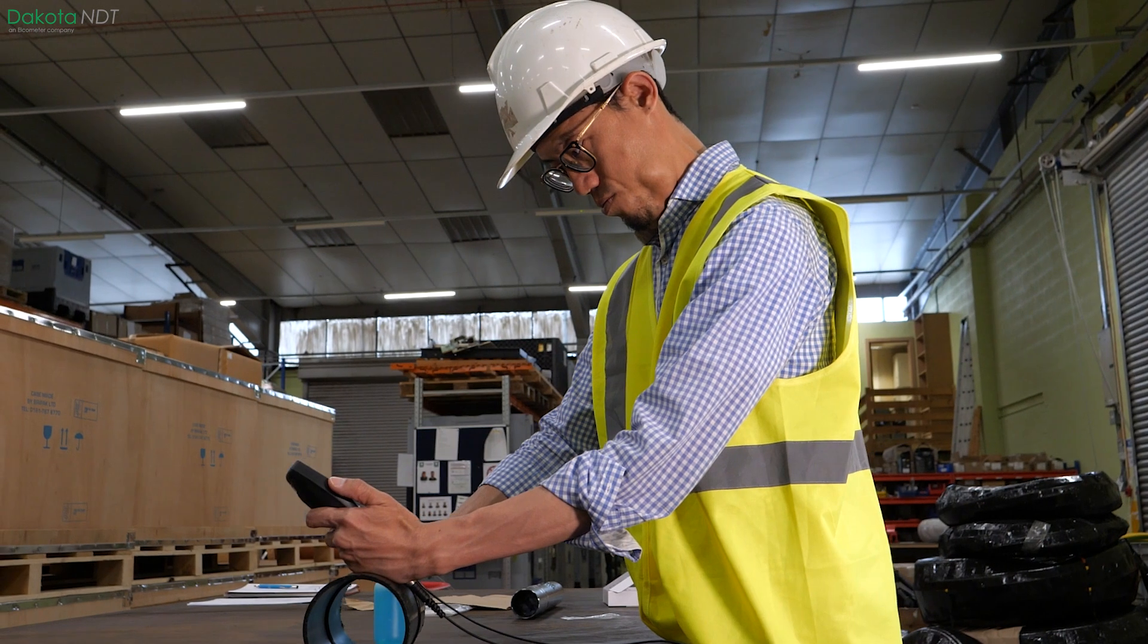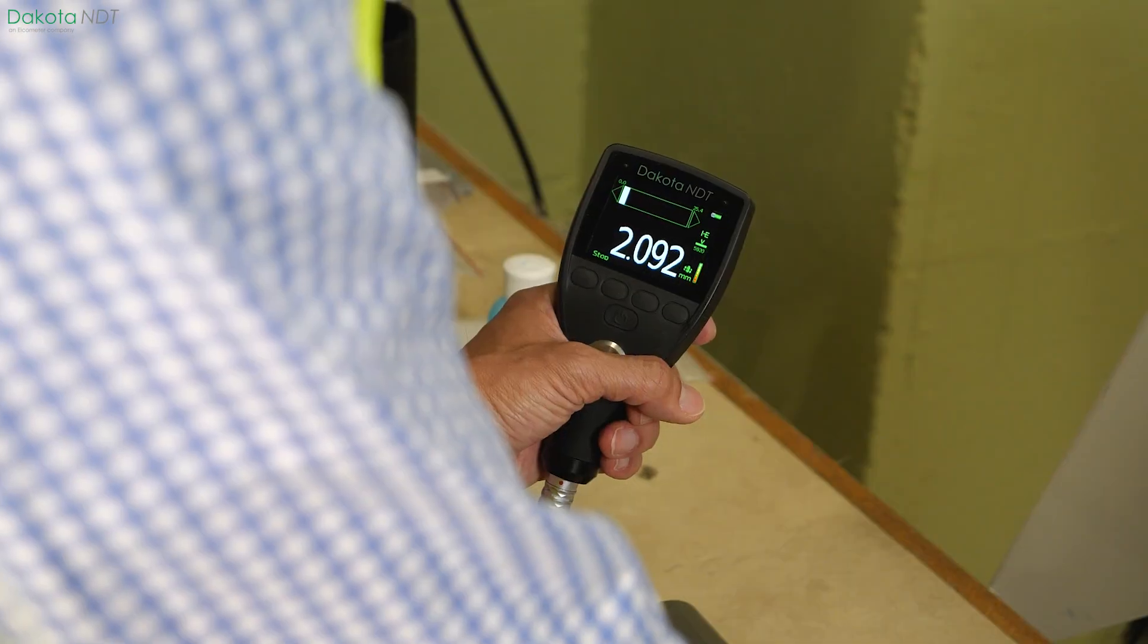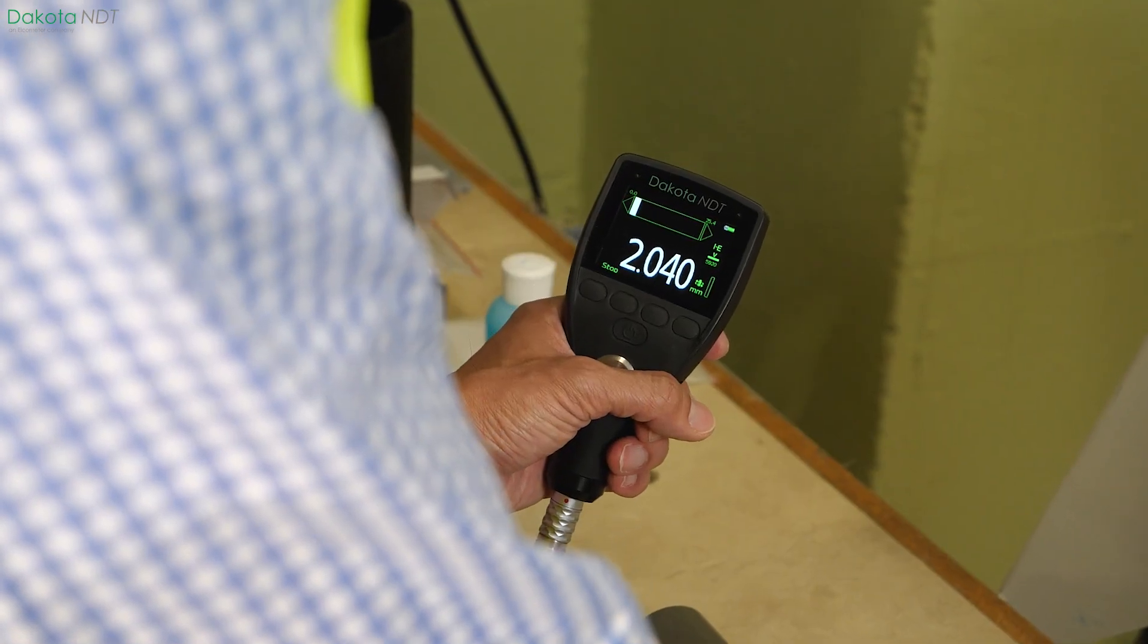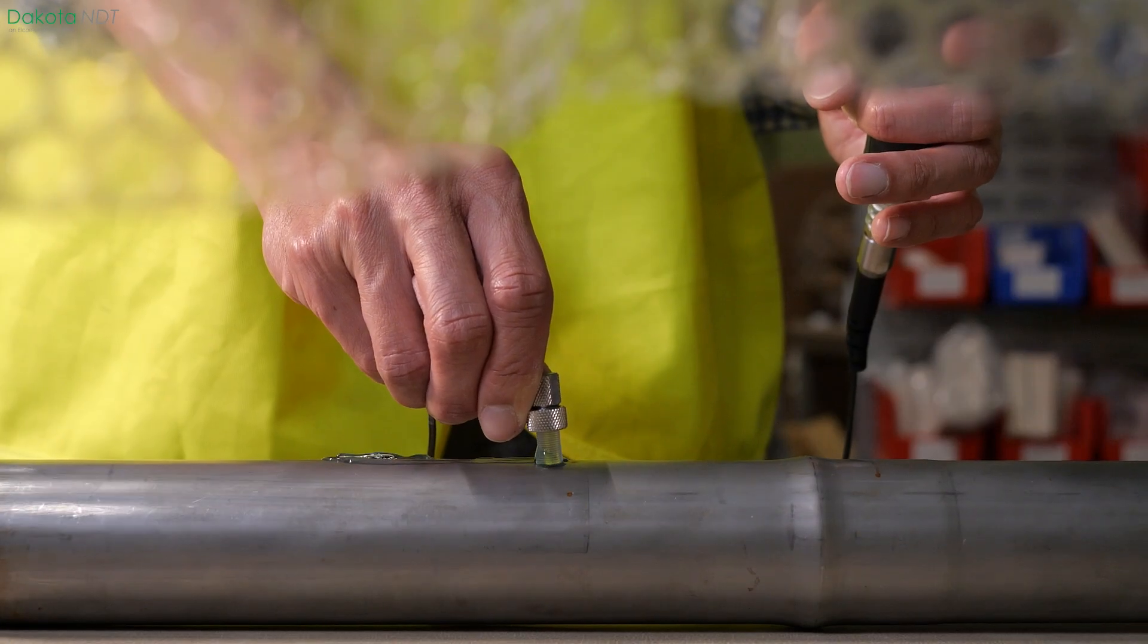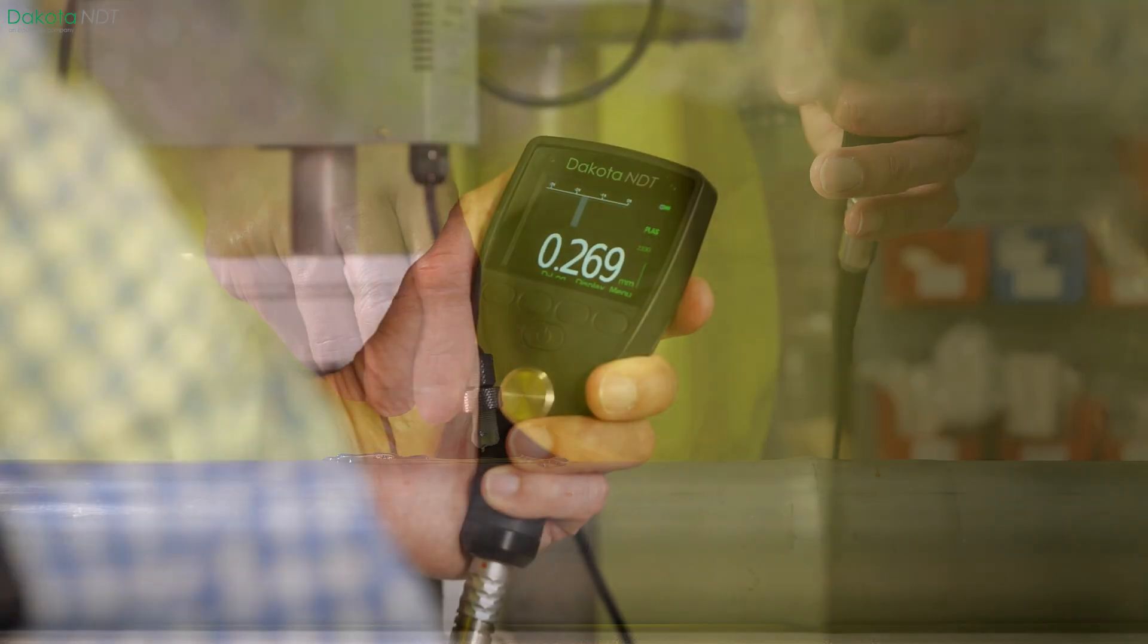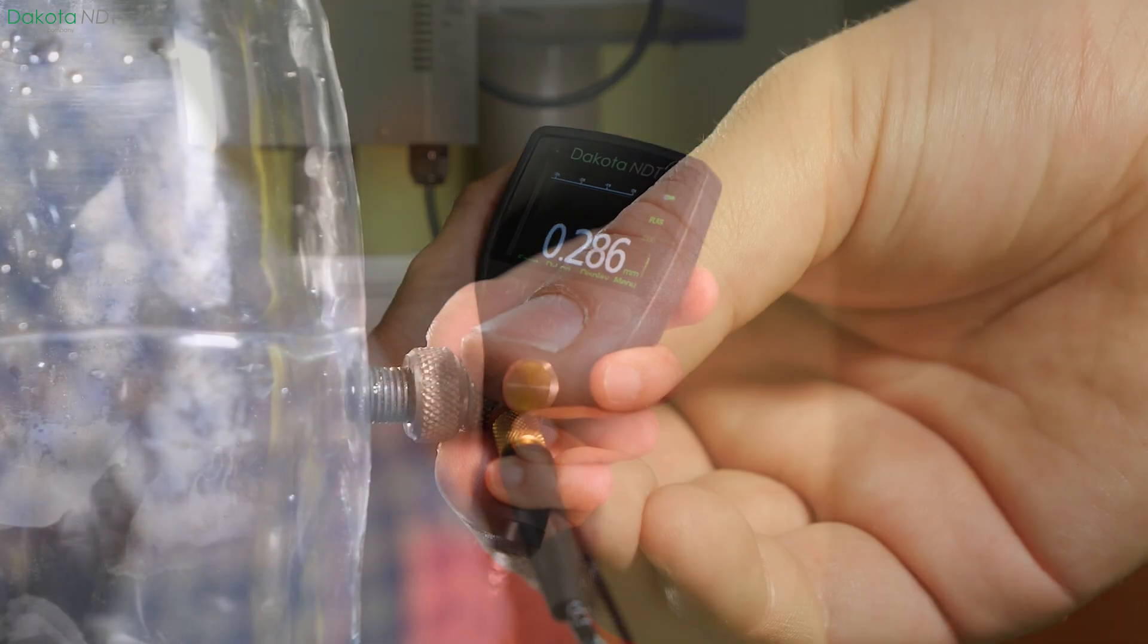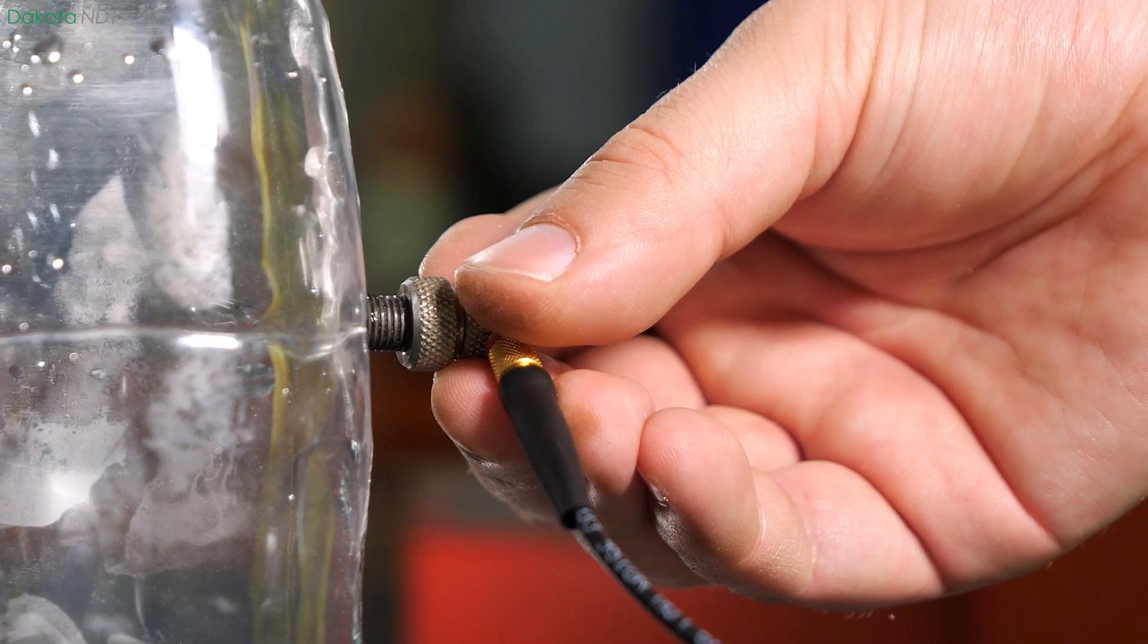When it comes to measuring thin materials with pinpoint accuracy, the Dakota NDT PCX ultrasonic precision thickness gauges are designed to provide accurate and reliable material thickness measurements on materials as thin as 0.15 mm.